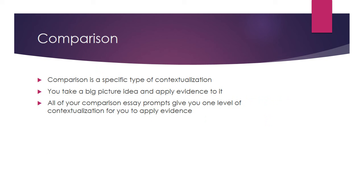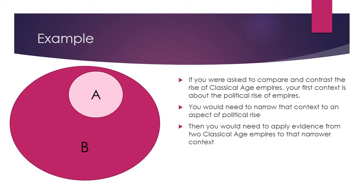Comparison is a specific type of contextualization — you take a big picture idea and apply evidence to it. All of your comparison essay prompts give you one level of contextualization for you to apply evidence. For example, if you were asked to compare and contrast the rise of classical age empires, your first context is about the political rise of empires. You would need to narrow that context to an aspect of political rise: Are you talking about government? Military? Geographical expansion? Cultural or social control? The contextualization the prompt gives you is political rise, and then you need to narrow it down to get that evidence — circle A — into your essay.